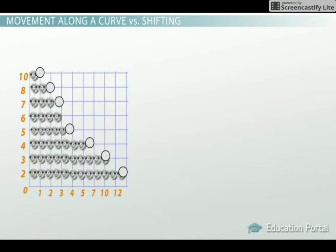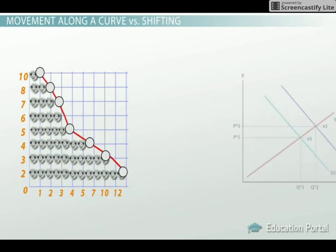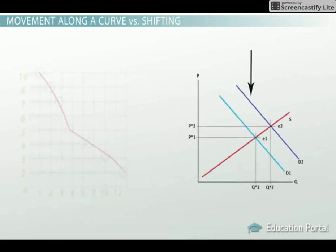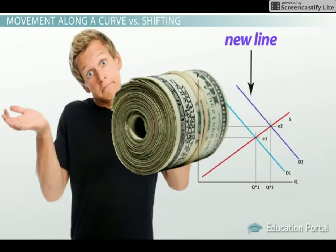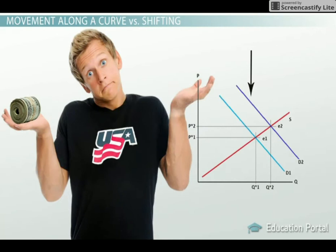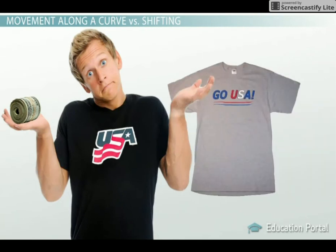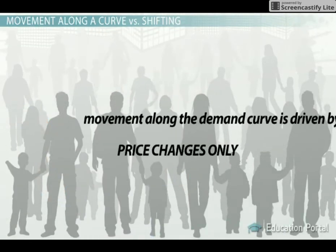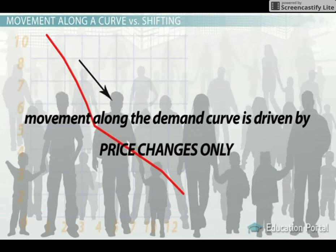As the price falls, Jerry is willing to buy more DVDs. Note that it's important to distinguish between movement along a demand curve and a shift in a demand curve. Movements along a demand curve happen only when the price of the good changes. Demand curve shifts — where an entire new demand line is drawn — happen when things like changes in personal income, changes in taste and popularity of a product, changes in price of substitute goods, or population increases occur. Remember, movement along the demand curve is driven by price changes only.